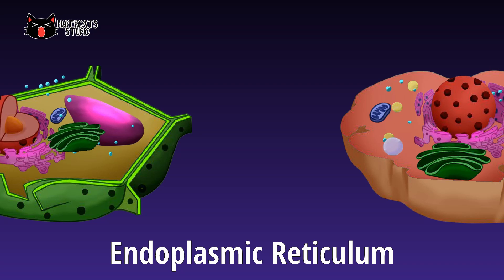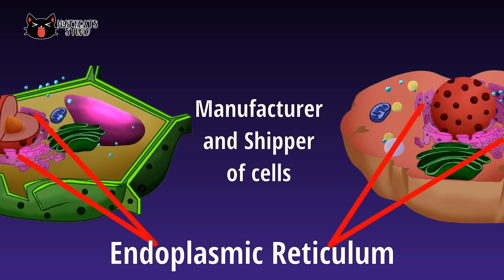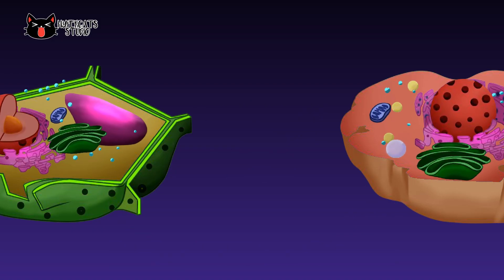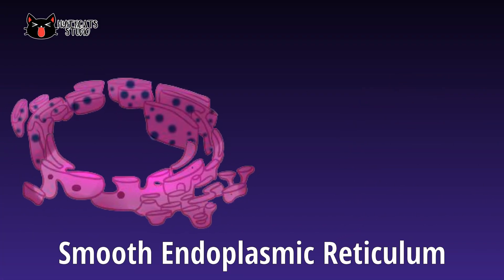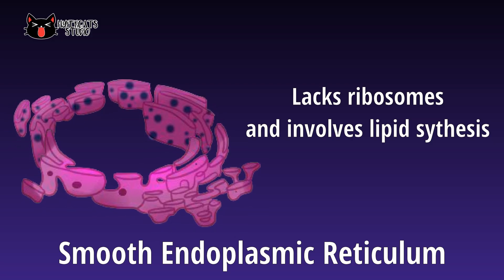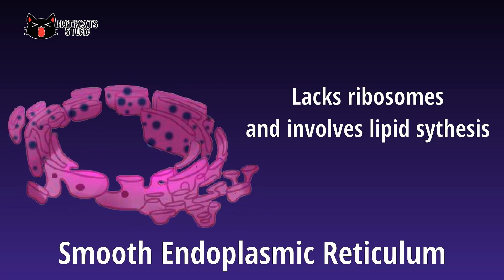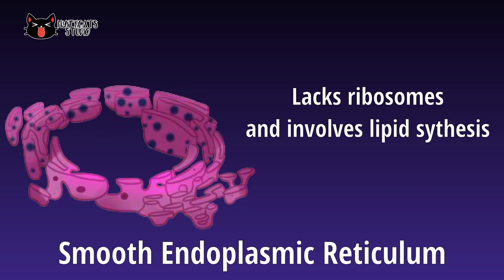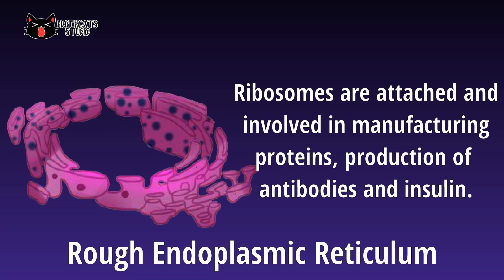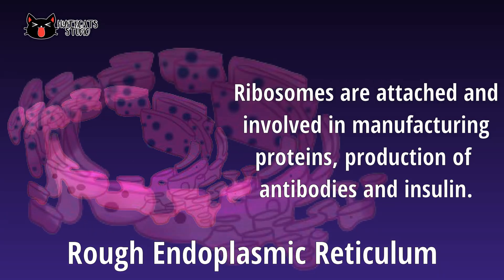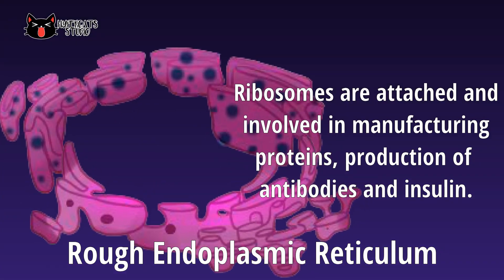The endoplasmic reticulum, known as the manufacturer and shipper of cells, forms an interconnected network of flattened sacs. It is divided into smooth and rough endoplasmic reticulum. Smooth endoplasmic reticulum lacks ribosomes on its surface and involves lipid synthesis and carbohydrate processing used to build the cell membrane. Rough endoplasmic reticulum has ribosomes attached to its surface and is involved in the manufacture of proteins, production of antibodies and insulin, and transport of proteins into the smooth endoplasmic reticulum.